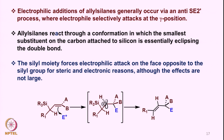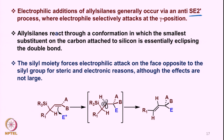Electrophilic additions of allylsilanes generally occur via an SE2' mechanism — the electrophile adds to the gamma position, the opposite end of the double bond from the silicon. So with alpha, beta, gamma labeling, the electrophile adds at gamma and the silicon leaves, which is why this is called an SE2' reaction, i.e., substitution at the allylic position.